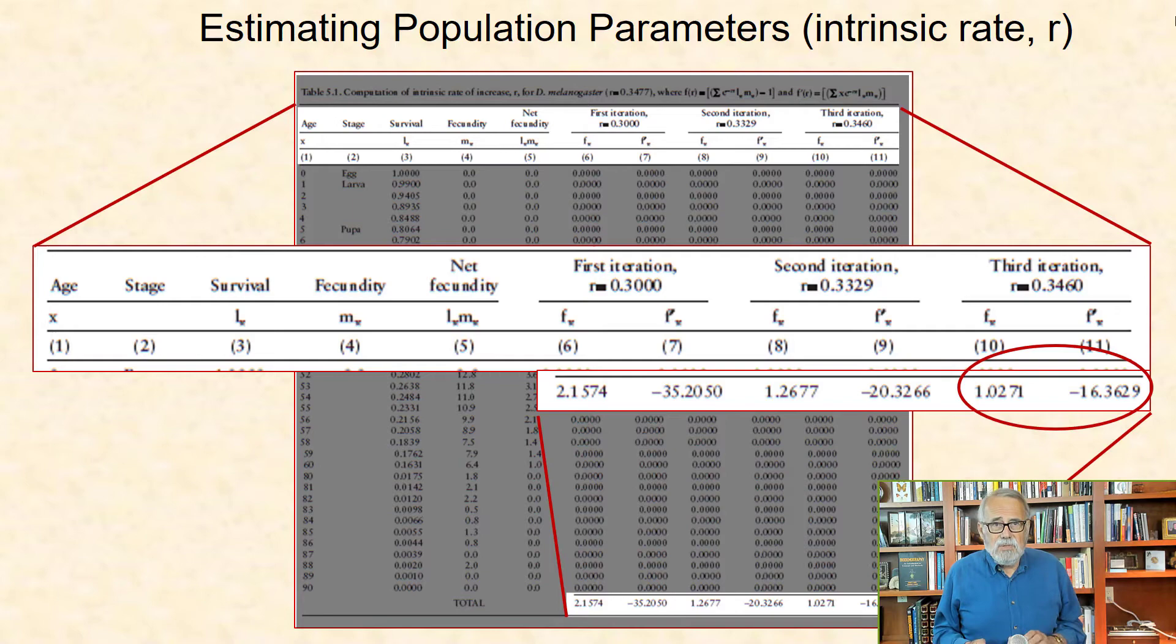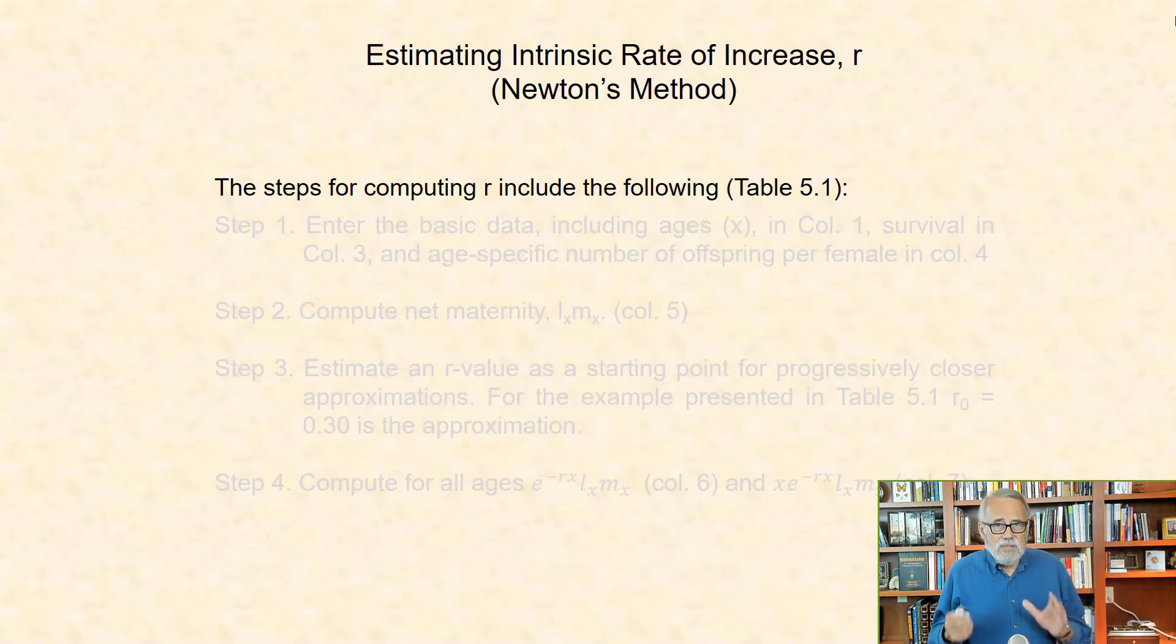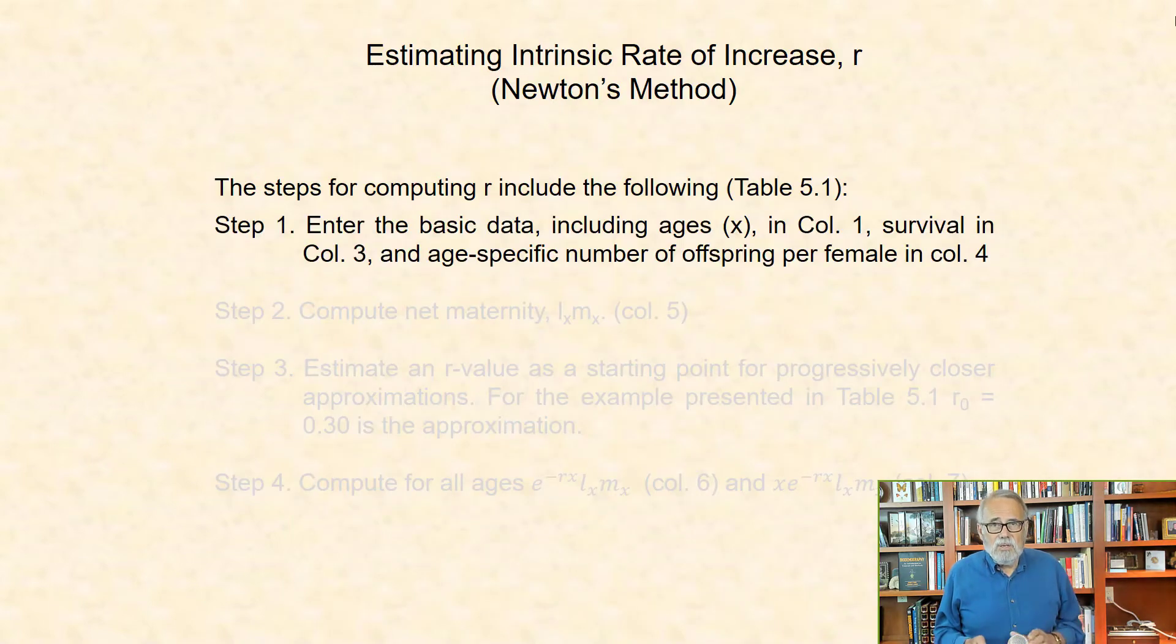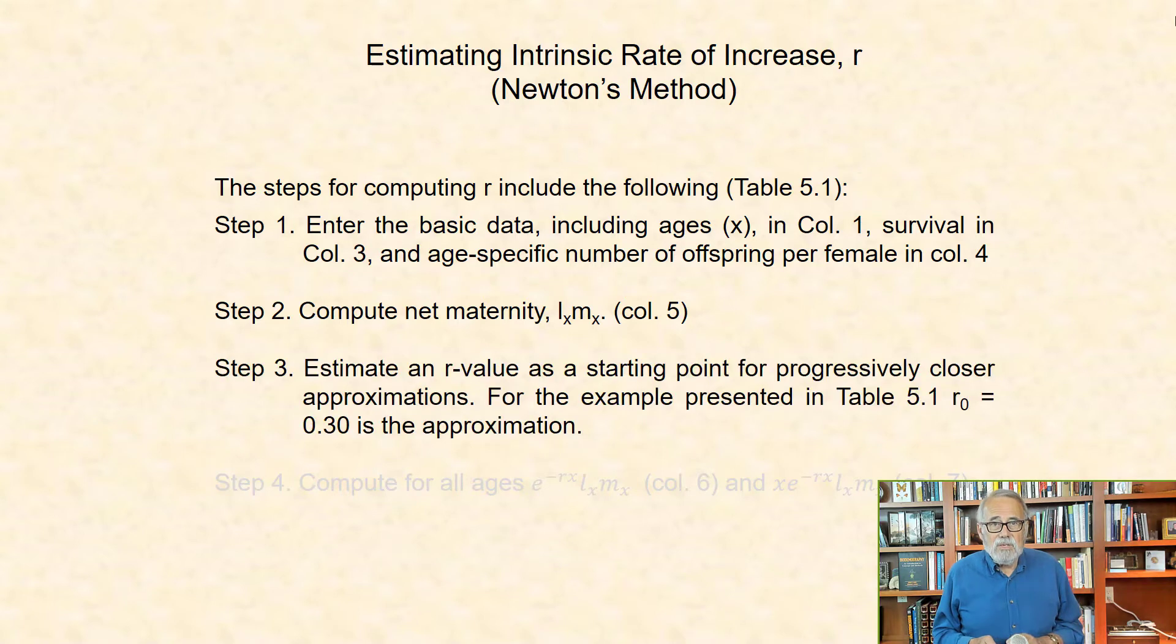The steps for computing r include the following. Step 1: Enter the basic data including ages X in column 1, survival in column 3, and age-specific number of offspring per female in column 4. Step 2: Compute the net maternity, that is LX*MX. That goes in column 5. Step 3: Estimate an r-value as a starting point for progressively closer approximations. For the example, the first guess is r0 equal 0.3.